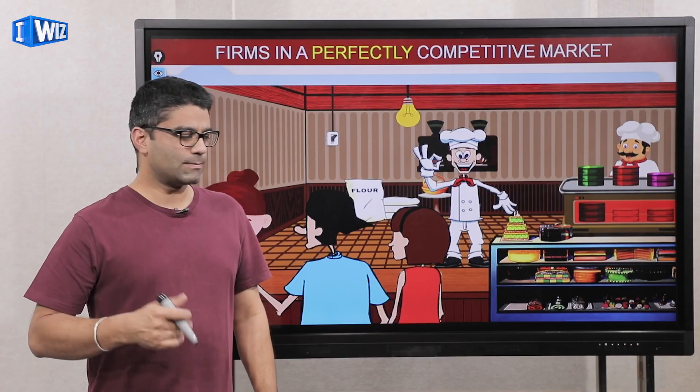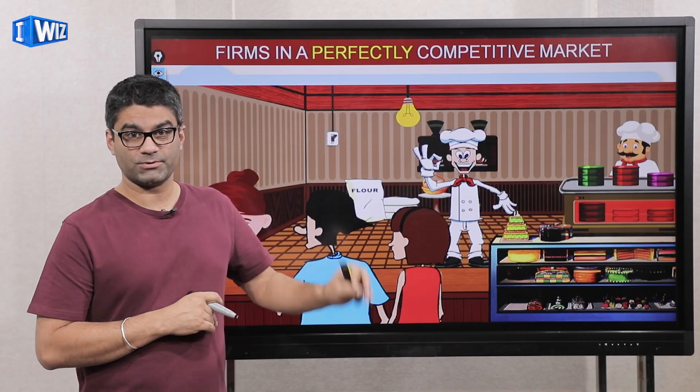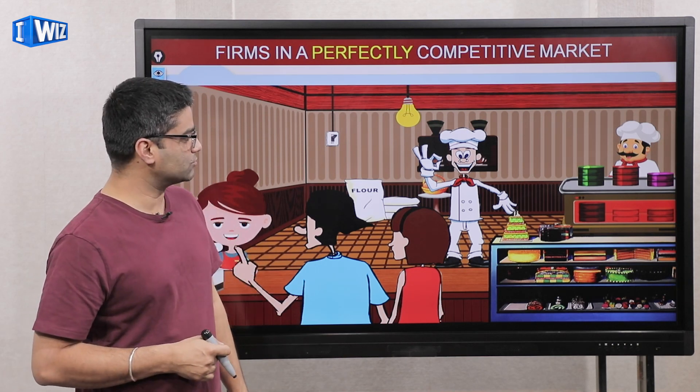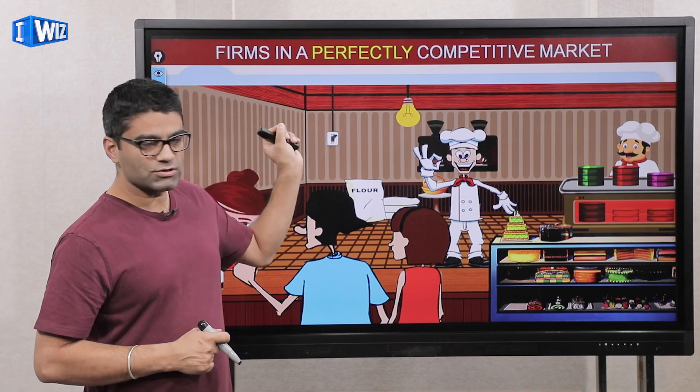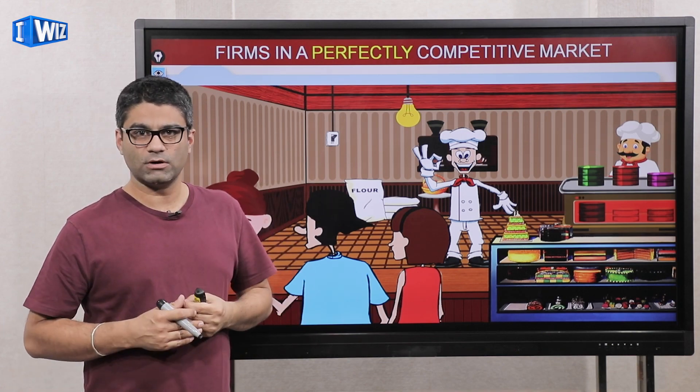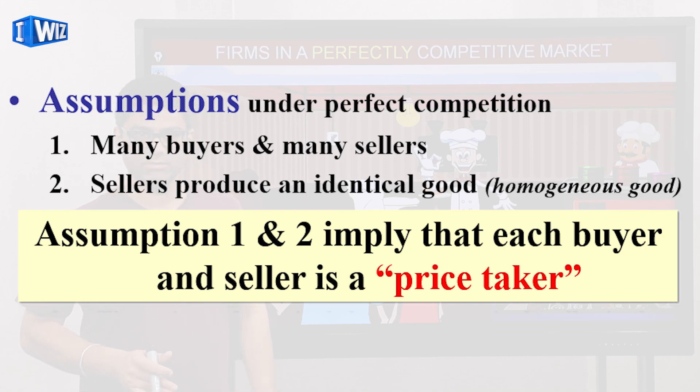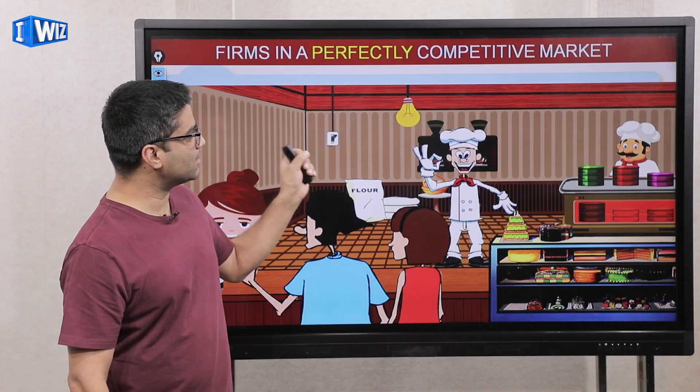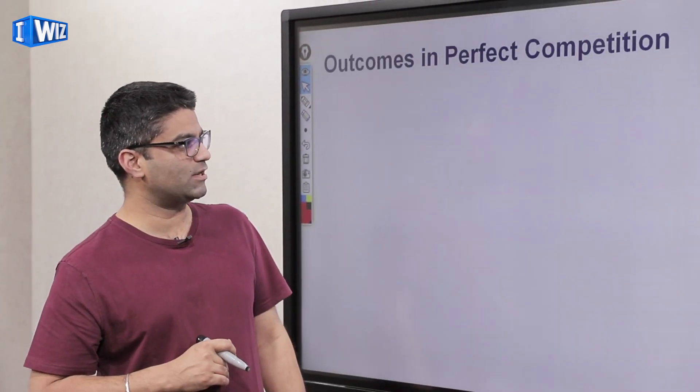Hey guys, hope you're ready to learn about how decisions are made in a perfectly competitive market. In the last couple of videos we talked about a specific market which is perfect competition, which is unlike other markets in which you produce goods. One of the main features of a perfectly competitive market is that any producer or any consumer can buy or sell the good without having any impact on the market price. All you do is take the price that's given to you and decide how much to produce, which I'll review briefly before proceeding with today's video.